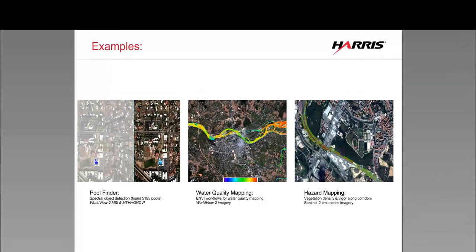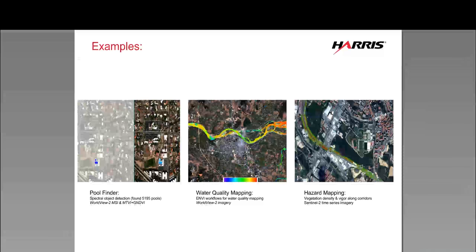We have developed a workflow using WorldView 2 multispectral imagery and a combination of indices to do spectral object detection. Sometimes a spectral approach can be really quick and easy to configure. For pools, in a single scene we found about 5,200 pools and did accuracy analysis — we were greater than 88% accurate using the spectral approach, just out of the box without fine tuning.